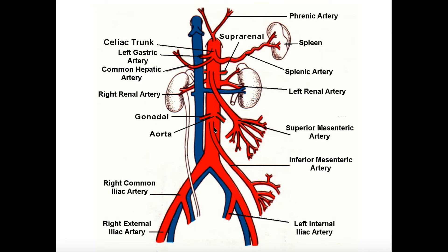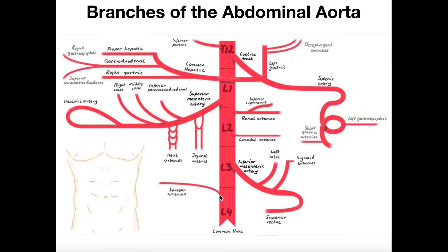The other landmark I like to use is the inferior mesenteric artery, because it's one of the closest to the bifurcation at the bottom, and it does not have a left or right — just like the celiac trunk. There is another artery below the inferior mesenteric artery — the left and right lumbar arteries — but that one is sometimes omitted. It's a very thin artery, so I don't like to use it as a landmark. If we know where the celiac trunk and the inferior mesenteric artery are, we can piece together what's between them.